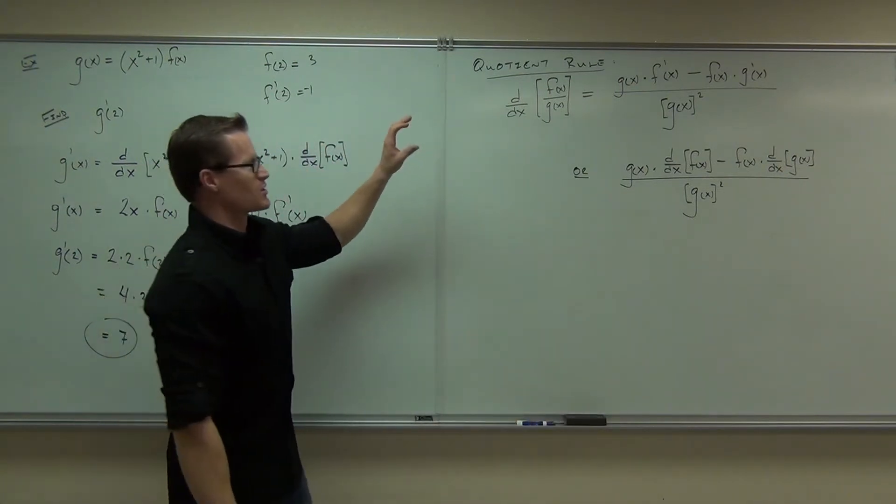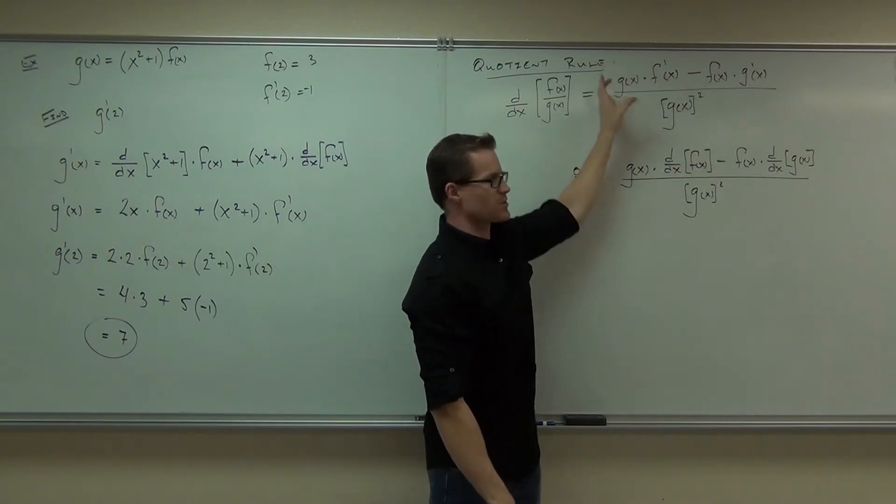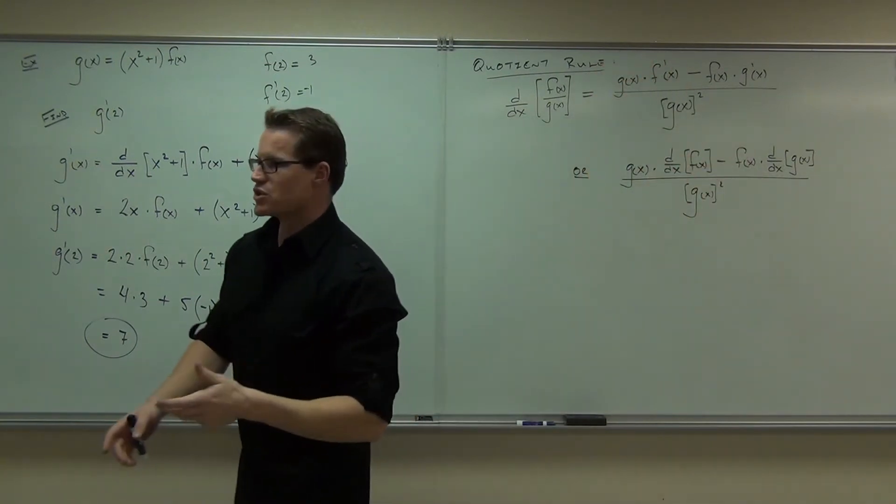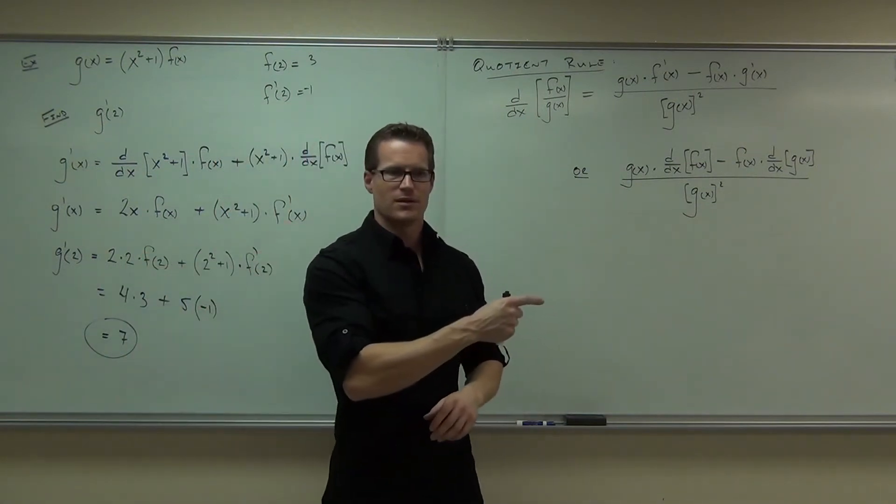Derivative of the bottom - I'm sorry, derivative of the top times the bottom, or the bottom times the derivative of the top, minus the top times the derivative of the bottom, all over the bottom squared. That's really what you're doing. Low D high minus high D low, square the bottom, away you go. Sound good?